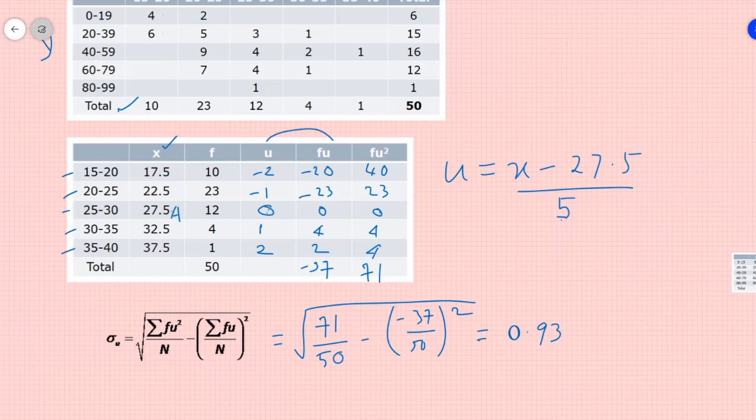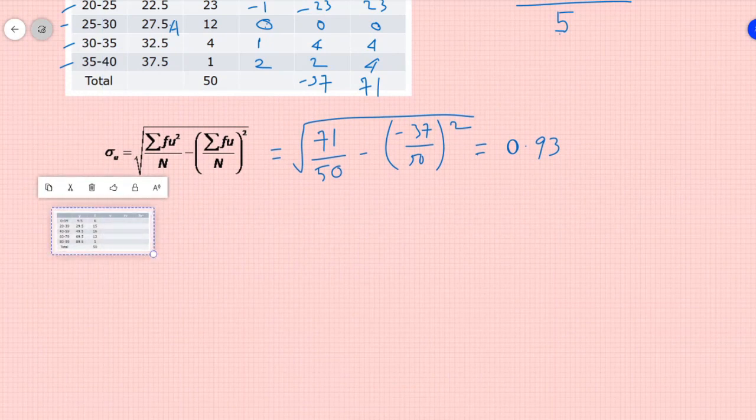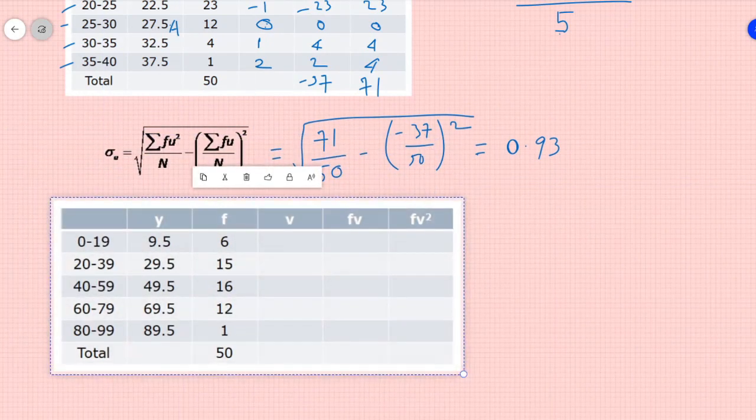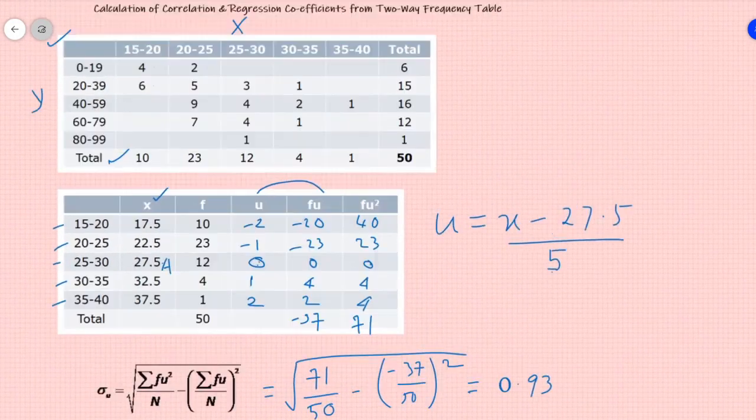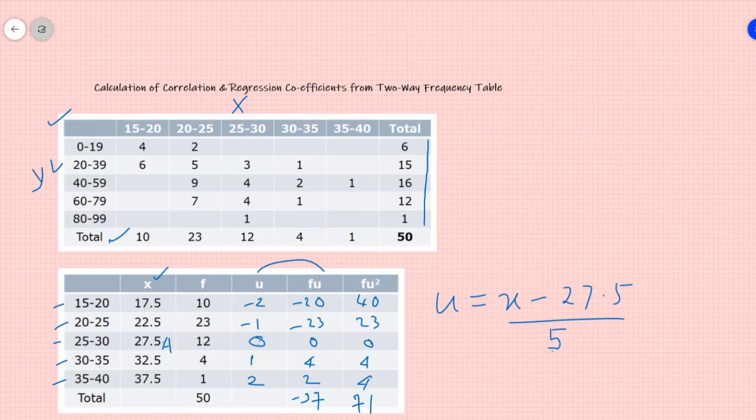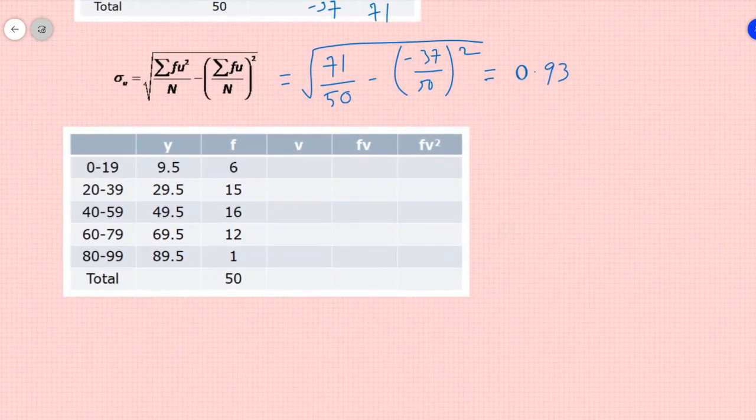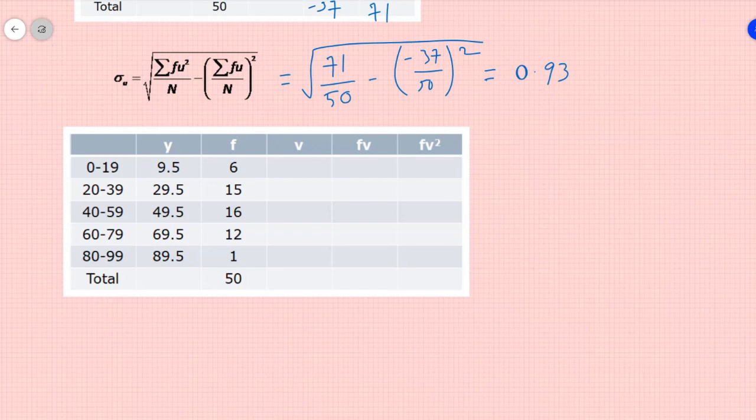On the similar note, I am trying to calculate sd of y distribution. Again for y distribution, I have segregated this table. This is your variable y, and these are the total frequencies for y, with these as class interval. So let us calculate this now. So mid value, similarly, identified 9.5, 29.5 with class interval 10.